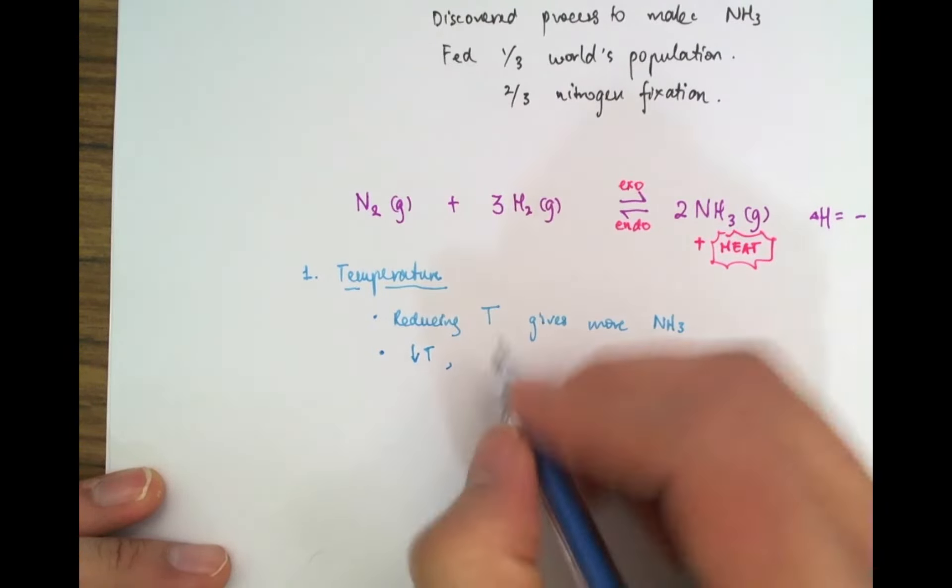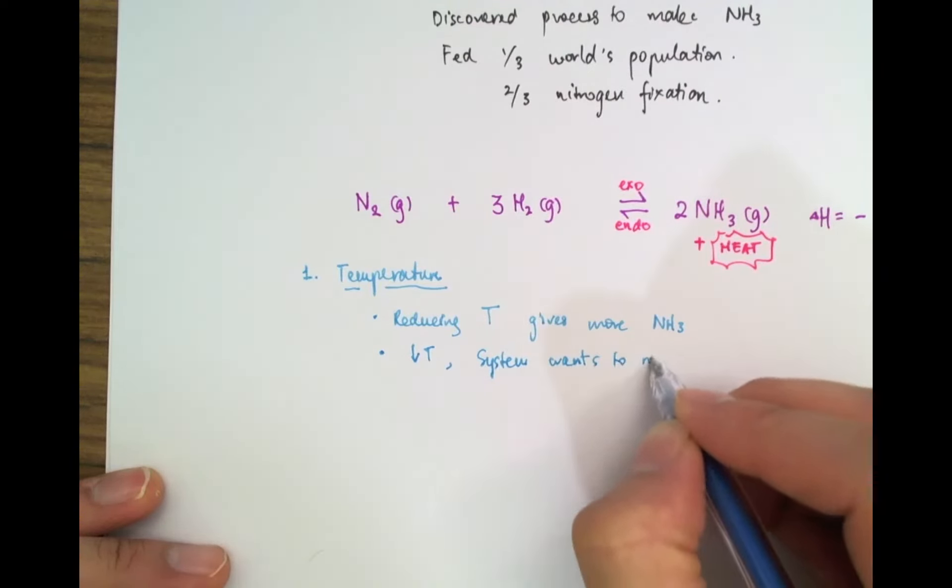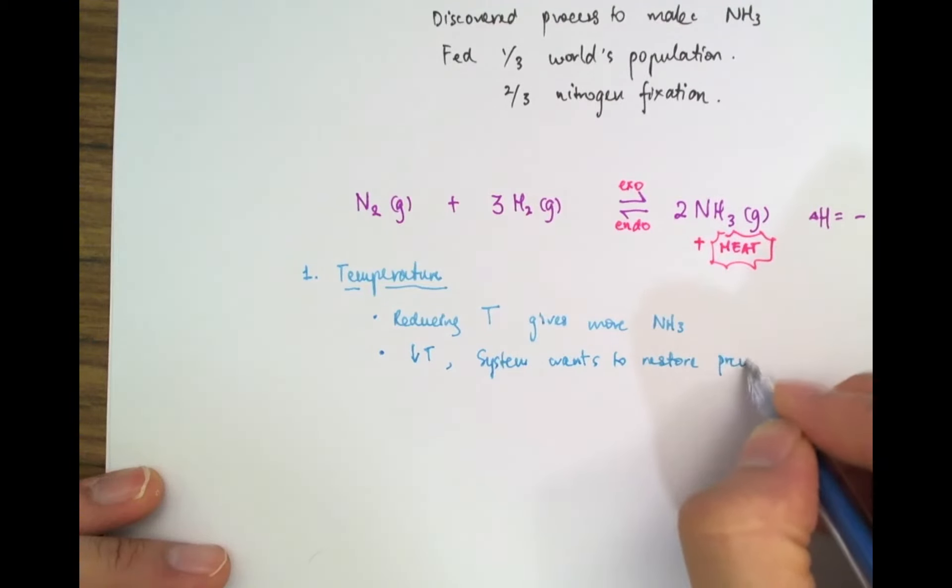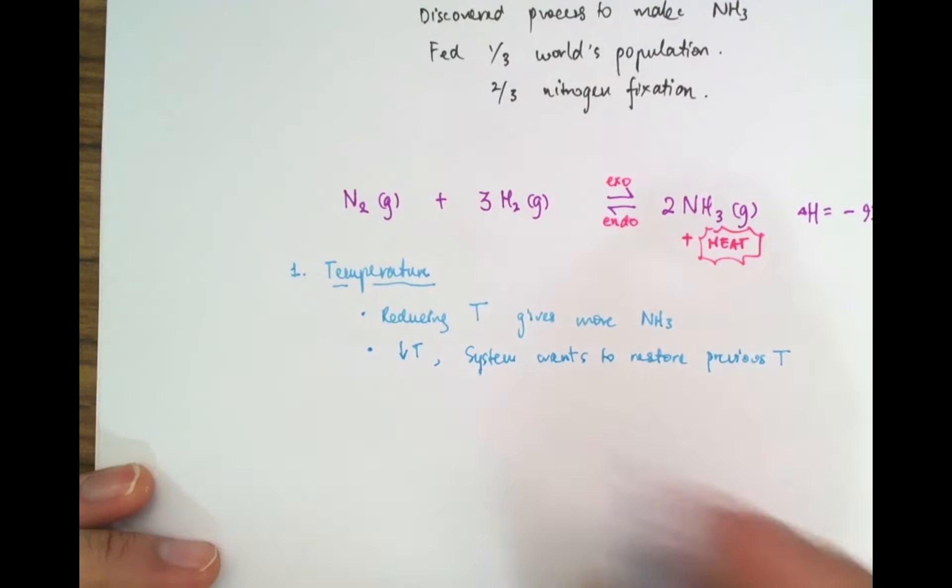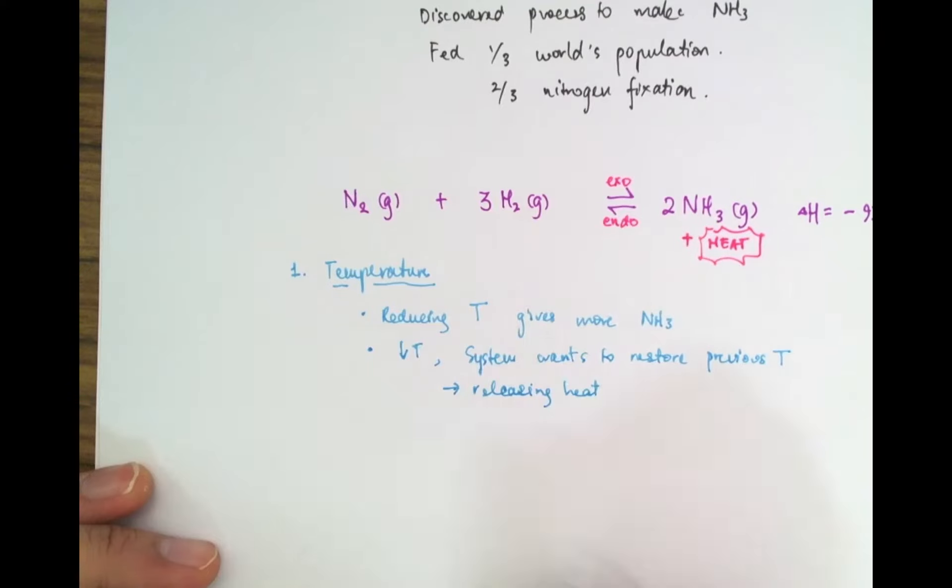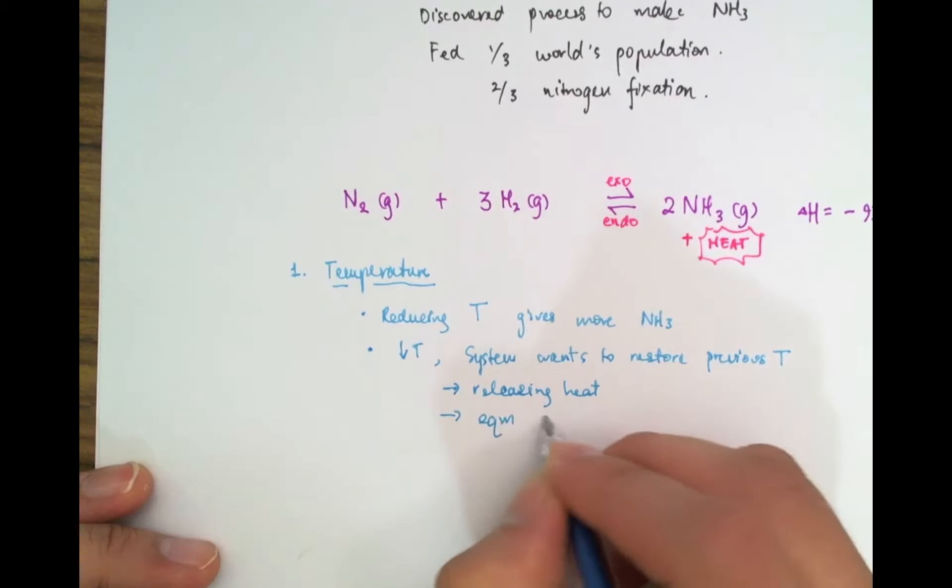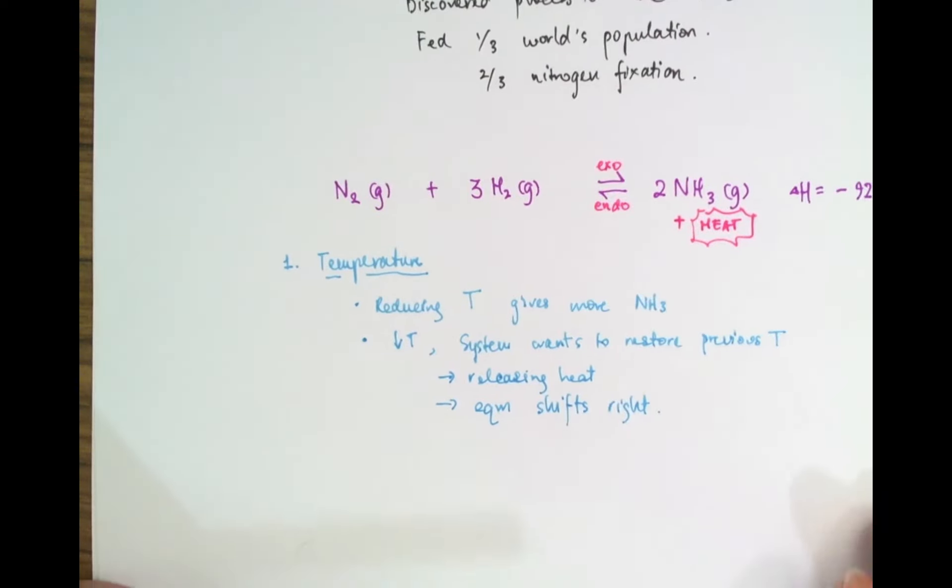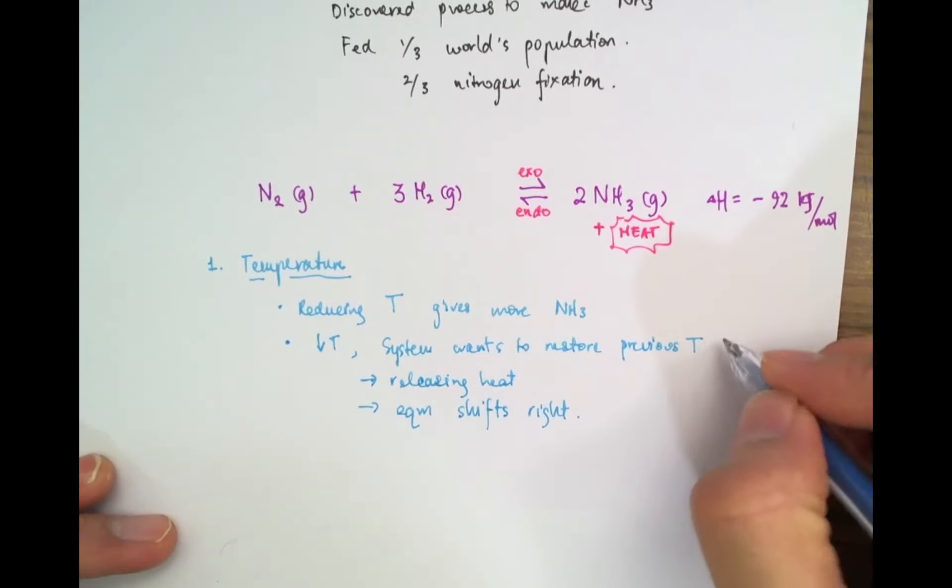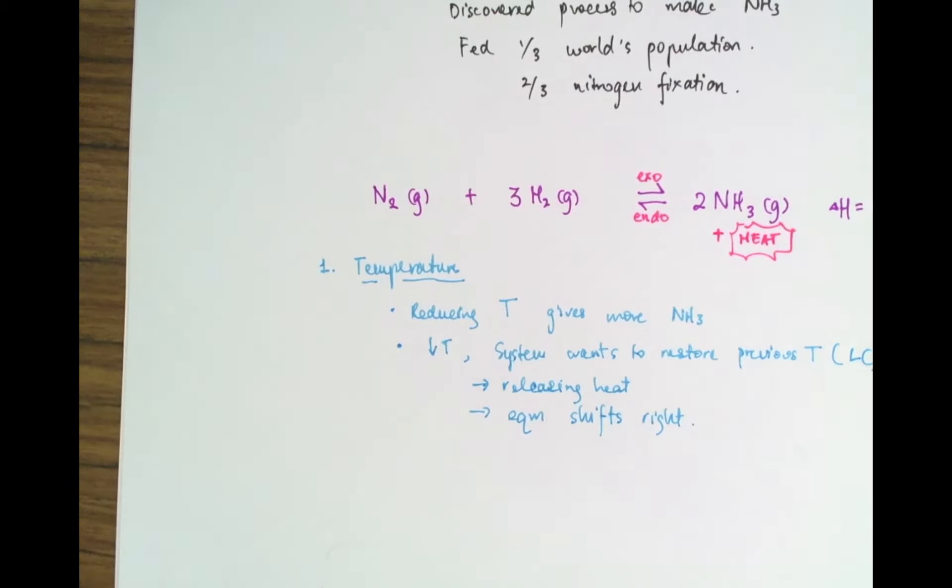Why is that? Because since this is an exothermic reaction, I can think of heat as being a product of the reaction because as the reaction proceeds in that direction it gives off heat. So it's exothermic in the forward direction and that also means that it's endo in reverse. Now because it's giving off heat, when I reduce the temperature, then by Le Chatelier's principle, the system wants to restore the previous temperature. And how can it do this? It can do this by releasing heat.